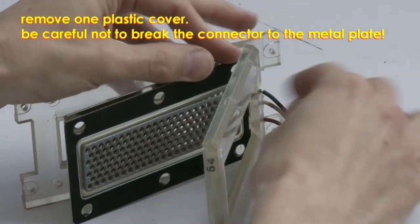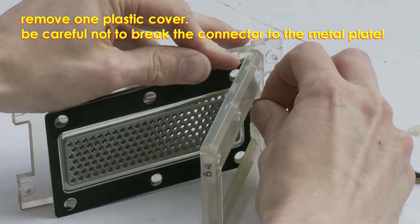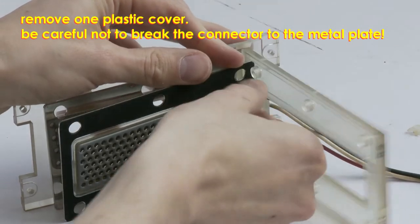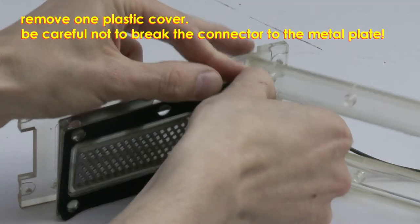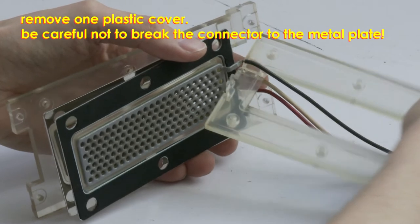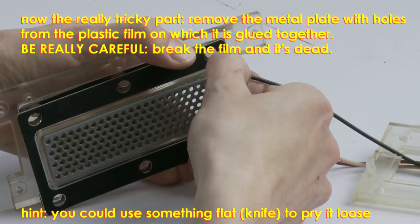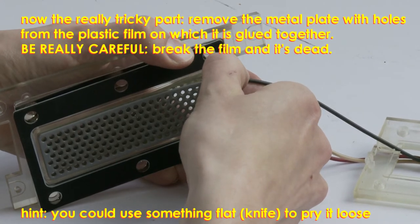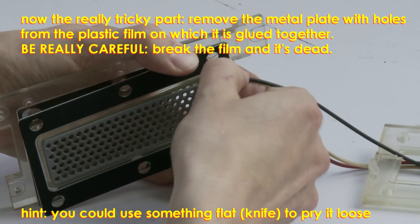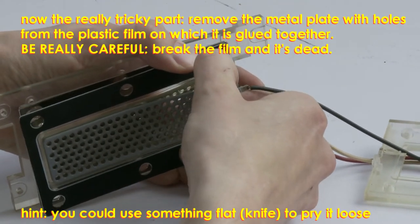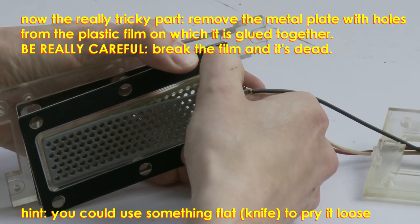Gently remove the first hard plastic cover. Then try to pry off the plate with small holes from the plastic thin film. Be very careful, if you rip the plastic, your tweeter is dead.